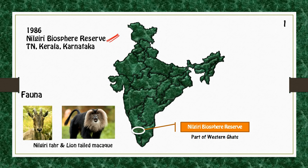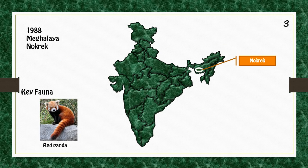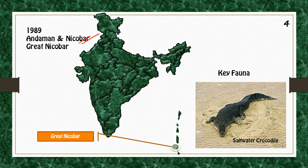The first one is the Nilgiri biosphere reserve, on the borders of Kerala, Tamil Nadu, and Karnataka. Key fauna include Nilgiri Tahr and Liontail Macaque. In Uttarakhand we have Nanda Devi biosphere reserve; key fauna include Snow Leopard and Himalayan Black Bear. In Meghalaya we have Nokrek biosphere reserve; key fauna include Red Panda. In Andaman and Nicobar we have Great Nicobar biosphere reserve; key fauna include Saltwater Crocodile.